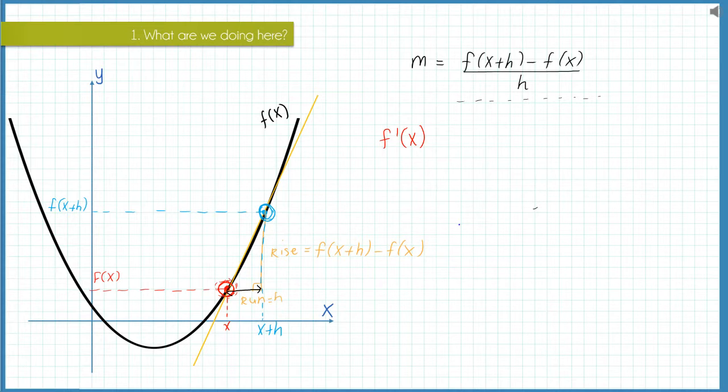So what we do instead is we say we take the limit of this expression as h approaches zero. So h is going to get infinitely close to zero but we're not going to sub in zero just yet.